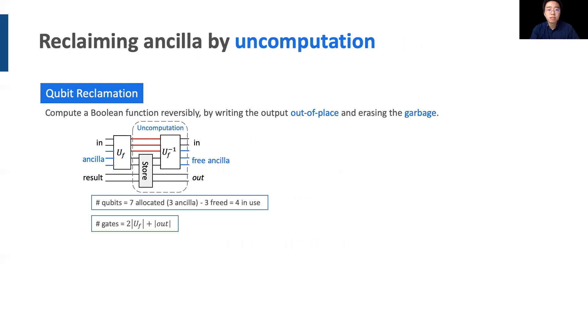Fortunately, we can reset and reclaim the ancilla qubits and disentangle the output from the garbage by uncomputation. This is a process where we store the output out of place and then perform the inverse of the original computation. As a result, the ancilla qubits are restored to 0 at the cost of extra gates used for uncomputation and extra space for storing the output. In this example, three ancilla are freed with the cost of gates in store and U sub F inverse.